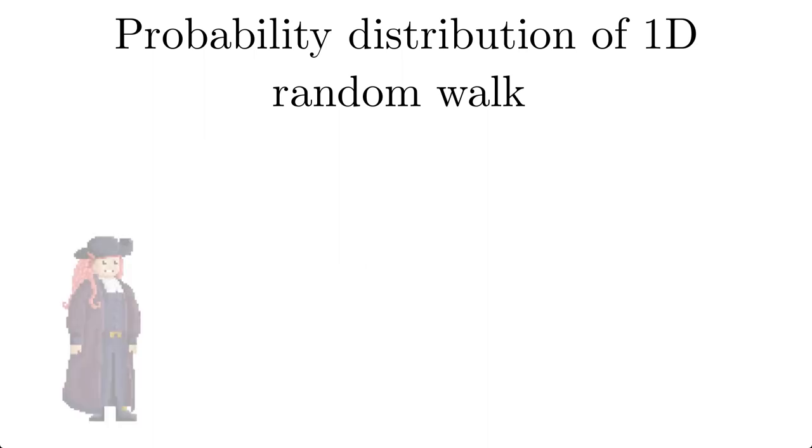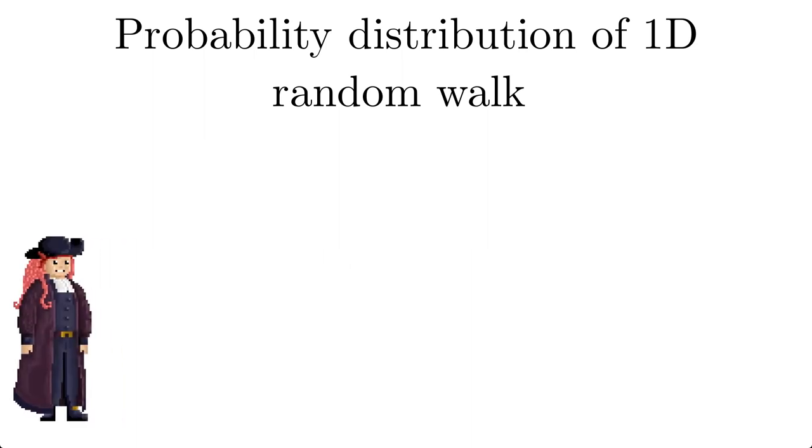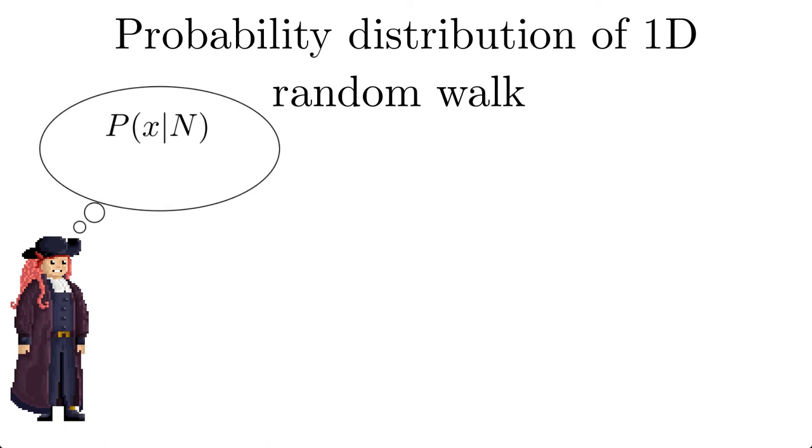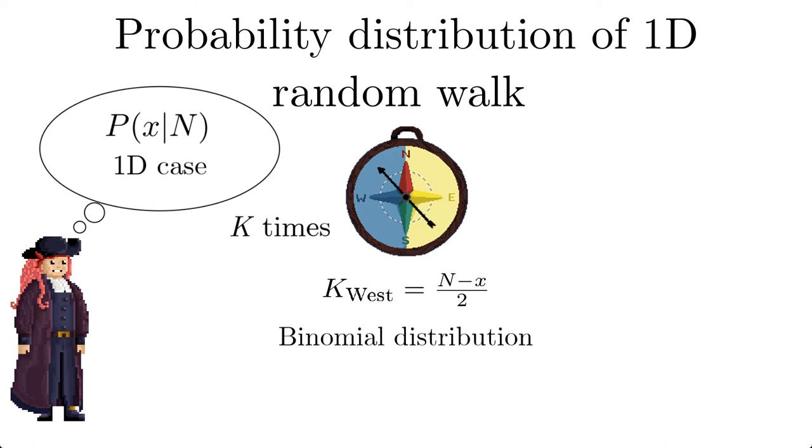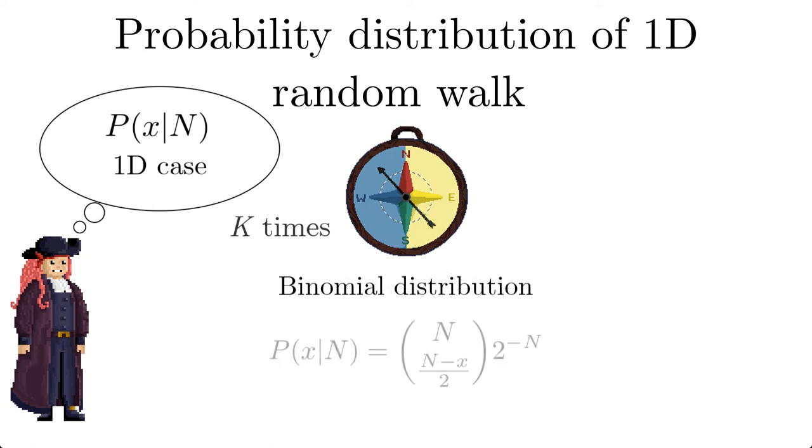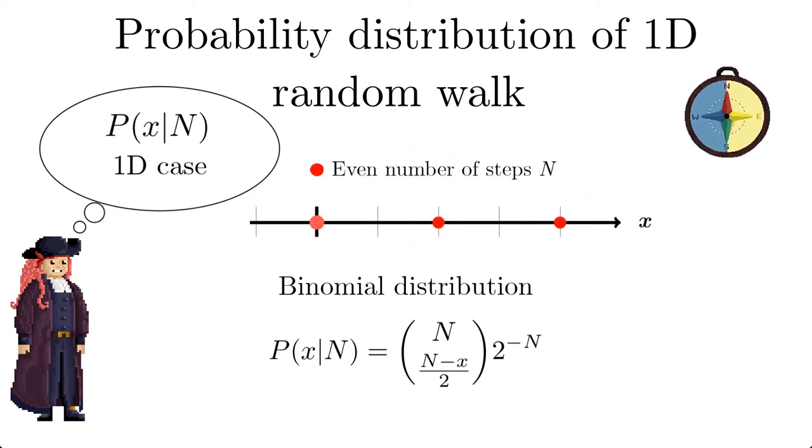As usual, Captain Bayes wanted to delve deeper and asked about the probability for the position. The answer is particularly transparent in one dimension, where we can use a compass that only has two directions, west and east. Then we can express the x-position after n steps by the difference of the number of steps taken in these directions. To reach position x in n steps, the number of times the compass points to the west must be, as the frequency to dial k times west on the random compass is given by the binomial distribution, the same holds true for the position. Note that in an even or odd number of steps, only an even or odd site can be reached.